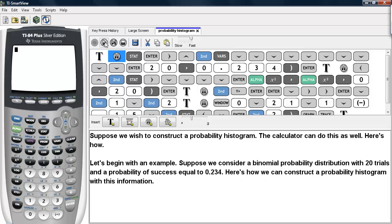Let's begin with an example. Suppose we consider a binomial probability distribution with 20 trials and a probability of success equal to 0.234.